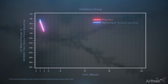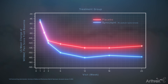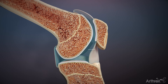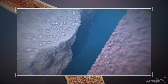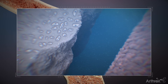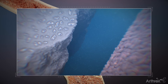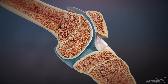Synojoint is shown to significantly decrease WOMAC pain scores through 26 weeks when compared to a placebo. In the joint, Synojoint provides lubrication and proven pain relief for mild to moderate osteoarthritis.